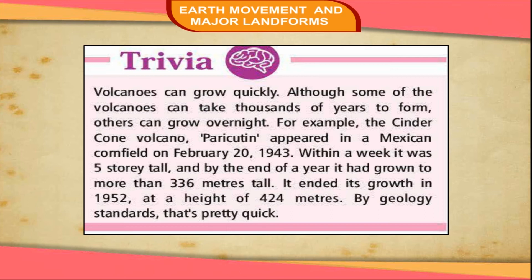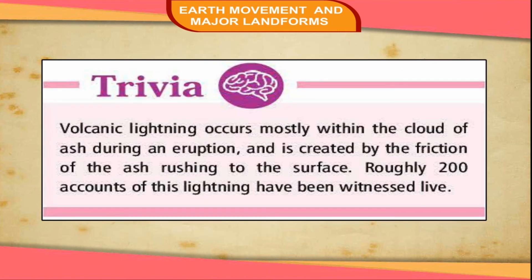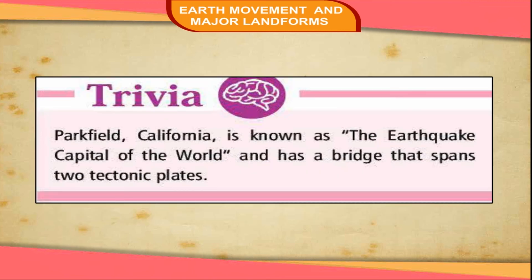By geology standards, that's pretty quick. Trivia: Volcanic lightning occurs mostly within the cloud of ash during an eruption and is created by the friction of the ash rushing to the surface. Roughly 200 accounts of this lightning have been witnessed live. Trivia: Parkfield, California, is known as the earthquake capital of the world and has a bridge that spans two tectonic plates.